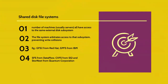A shared disk file system is one in which a number of machines, usually servers, all have access to the same external disk subsystem, usually a storage area network. The file system arbitrates access to the subsystem, preventing write collisions. Examples include GFS2 from Red Hat, GPFS from IBM, SFS from DataFlow, CXFS from SGI, and StorNext from Quantum Corporation.